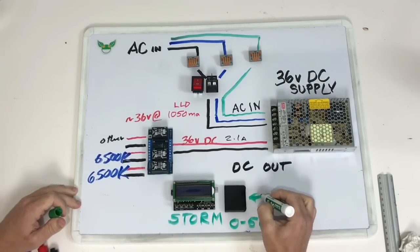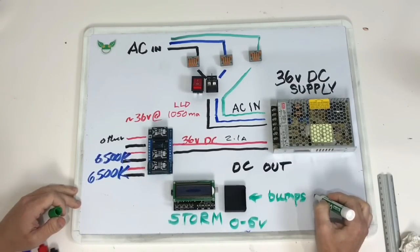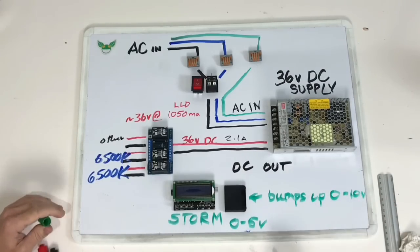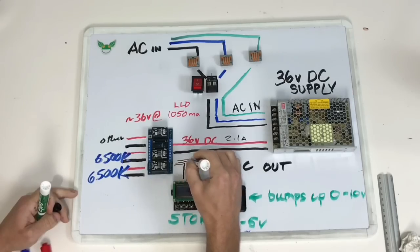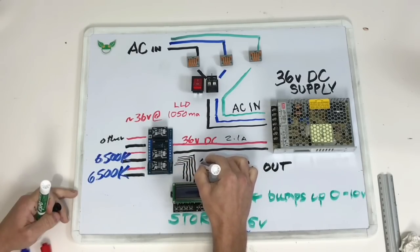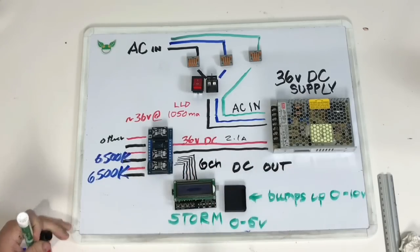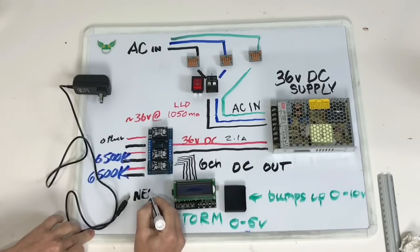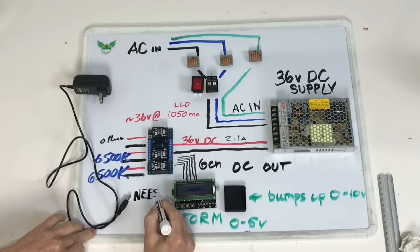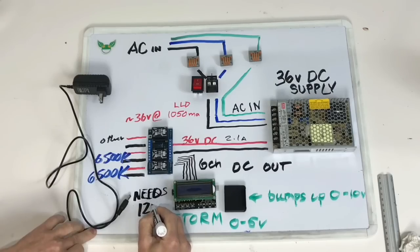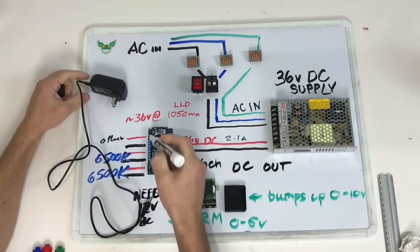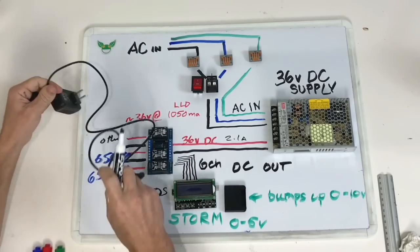The controller is a Storm controller from Rapid LED, and it only controls 0 to 5-volt drivers. Because the Meanwell HLG that are so common are 0 to 10-volt, you need this little analog bump-up thingy here. It bumps it up to a 0 to 10-volt signal. Four of our channels will be 0 to 10-volt, and we'll have two 0 to 5-volt. To run and power the StormX, you need this dongle thing that I hate because they take up so many spots on the power strip.